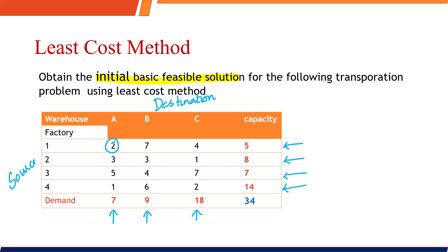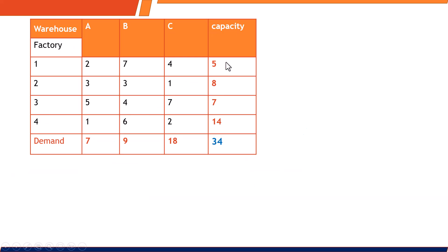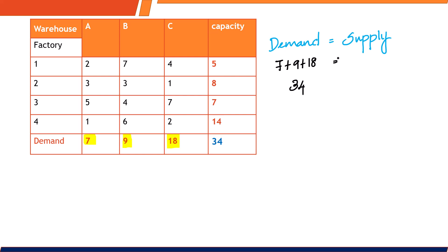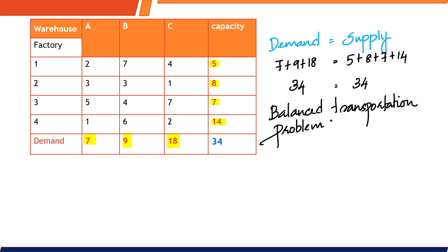In this method we find the least cost and start allocation there. At the very first level, find out whether the given problem is a balanced transportation problem or not. A balanced transportation problem means demand is always equal to supply. The total demand is 7 + 9 + 18 = 34. Similarly, the total capacity is 5 + 8 + 7 + 14 = 34. Since demand equals supply, this is a balanced transportation problem.